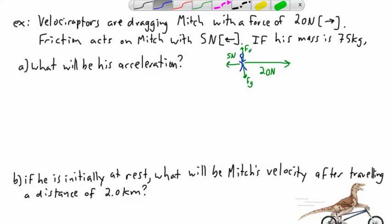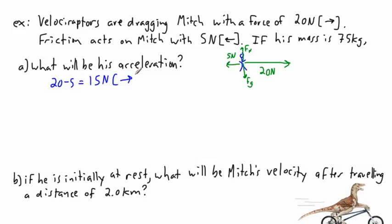Well the one that's biggest wins. So we know that 20 newtons is the one that wins, and 20 minus 5 is going to be 15 newtons to the right. So that will be my, therefore F net equals 15 newtons to the right. So it's going to be as if this velociraptor is dragging me to the right with a force of 15 newtons.